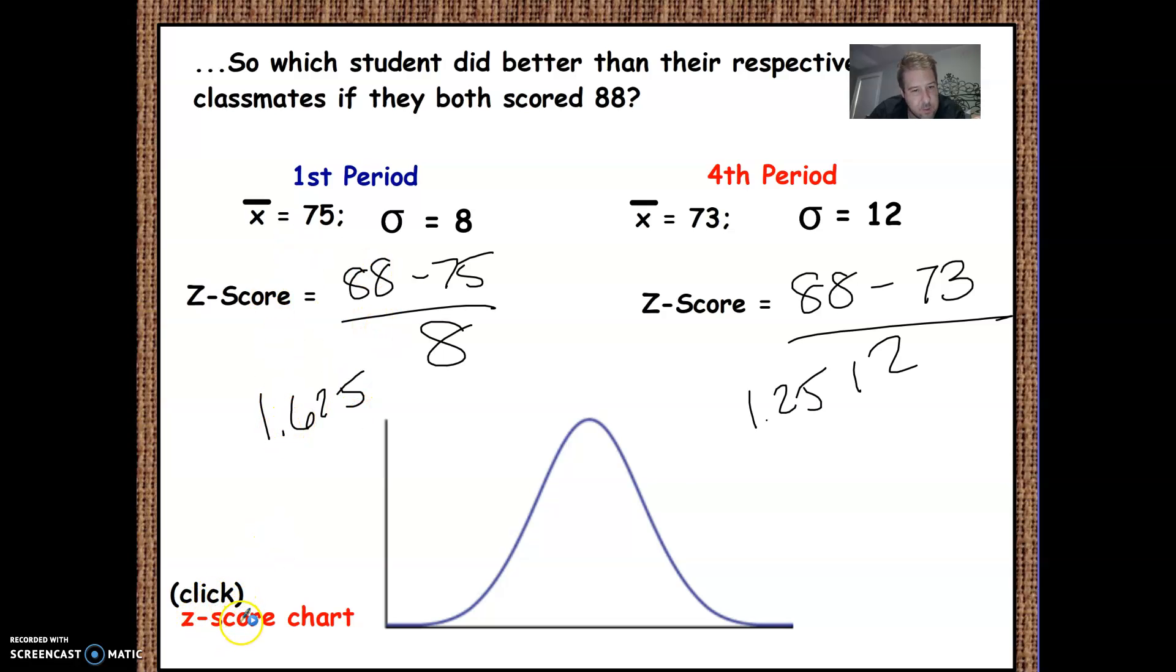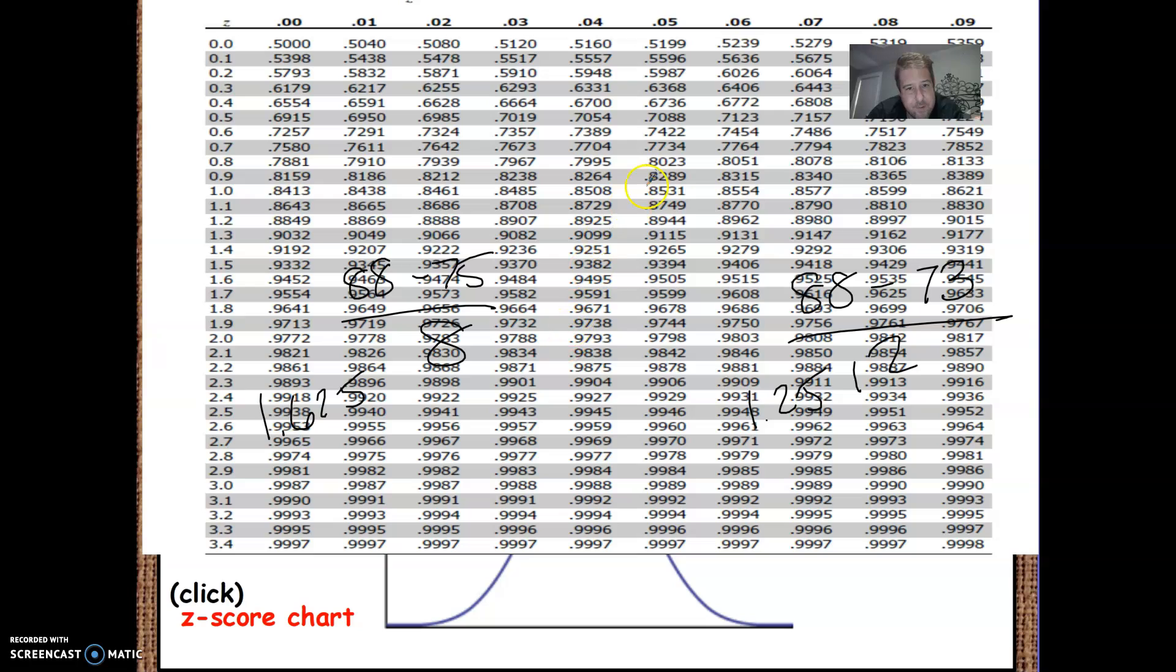Now, if I click on the Z score chart, 1.625, what you can see on this Z score chart is what percentage of the people that they beat. 1.625. Now, I'm going to say that's 1.63.